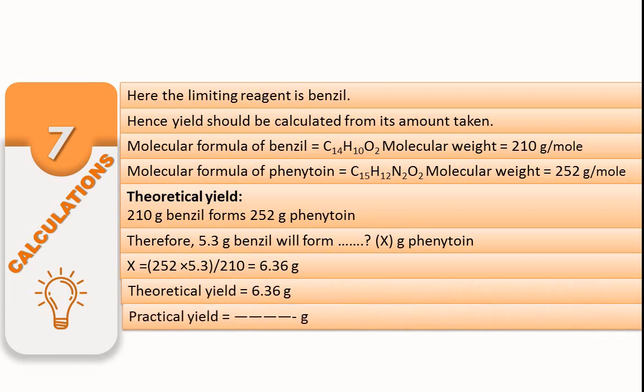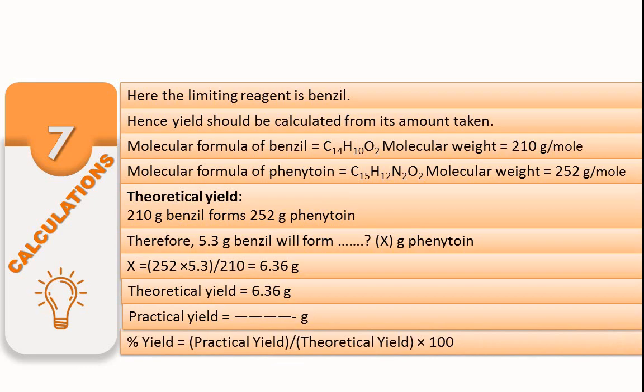Calculate the practical yield by measuring the product. After obtaining the practical yield, calculate the percentage yield. Percentage yield equals practical yield upon theoretical yield times 100.